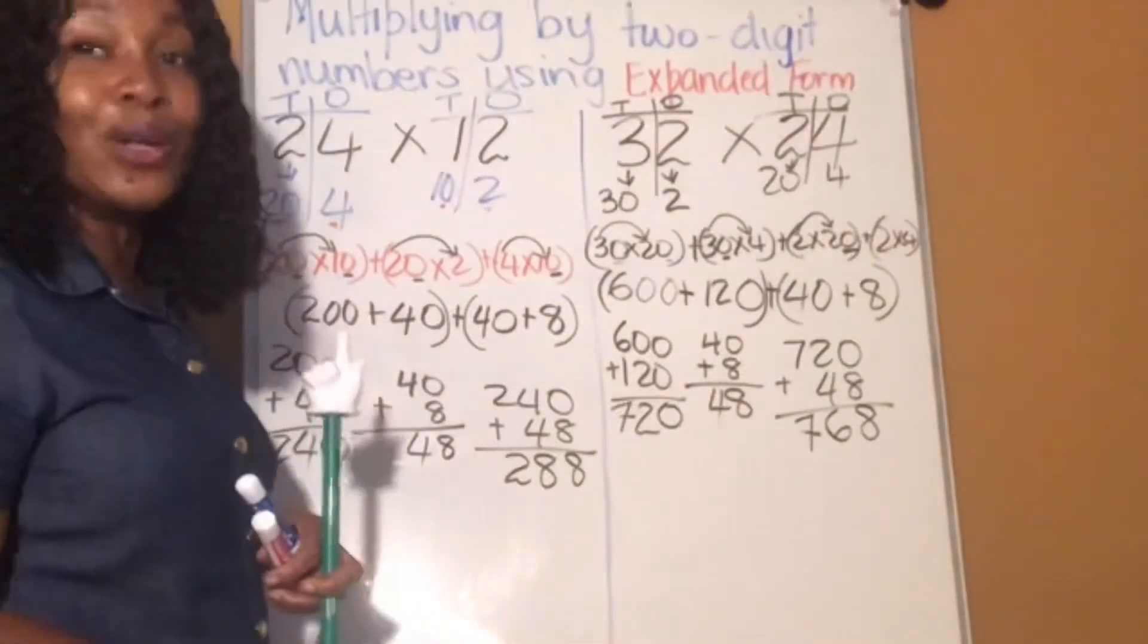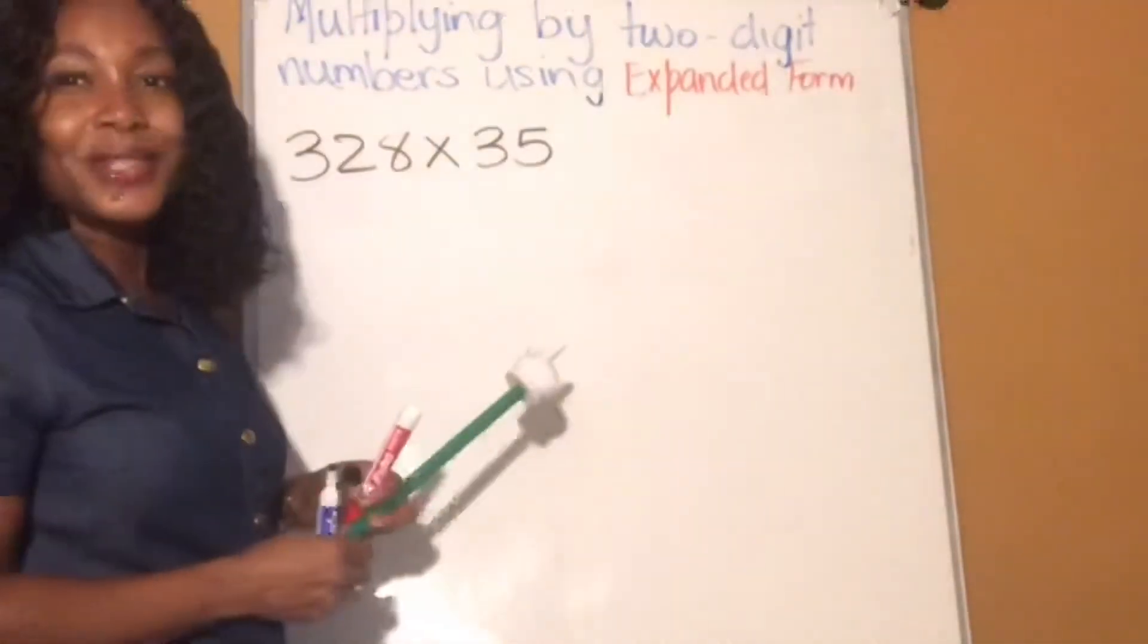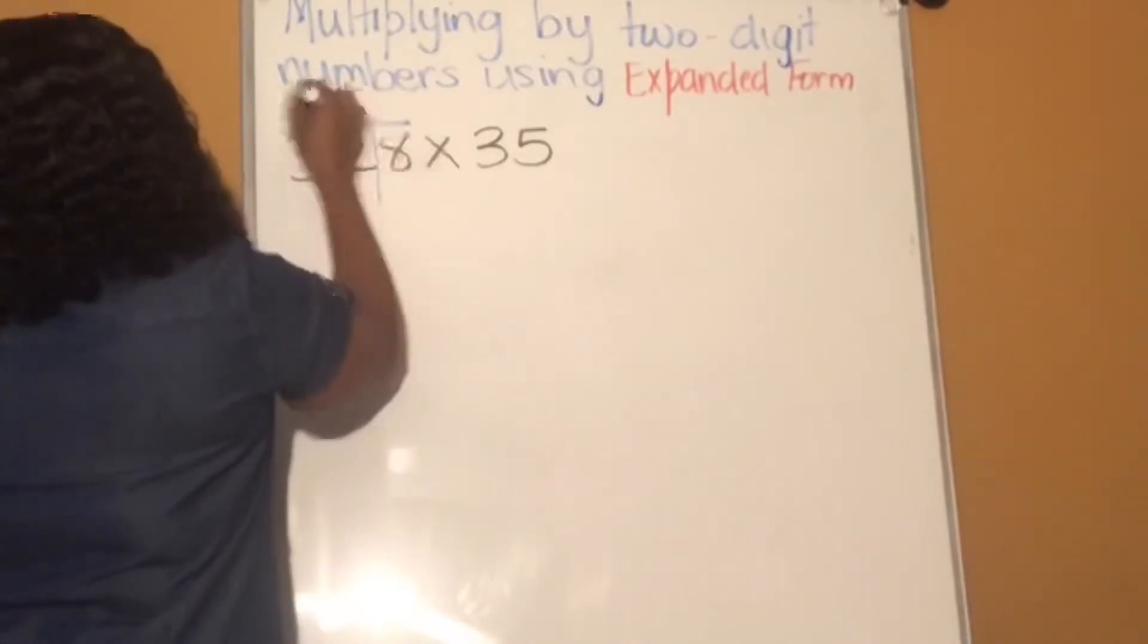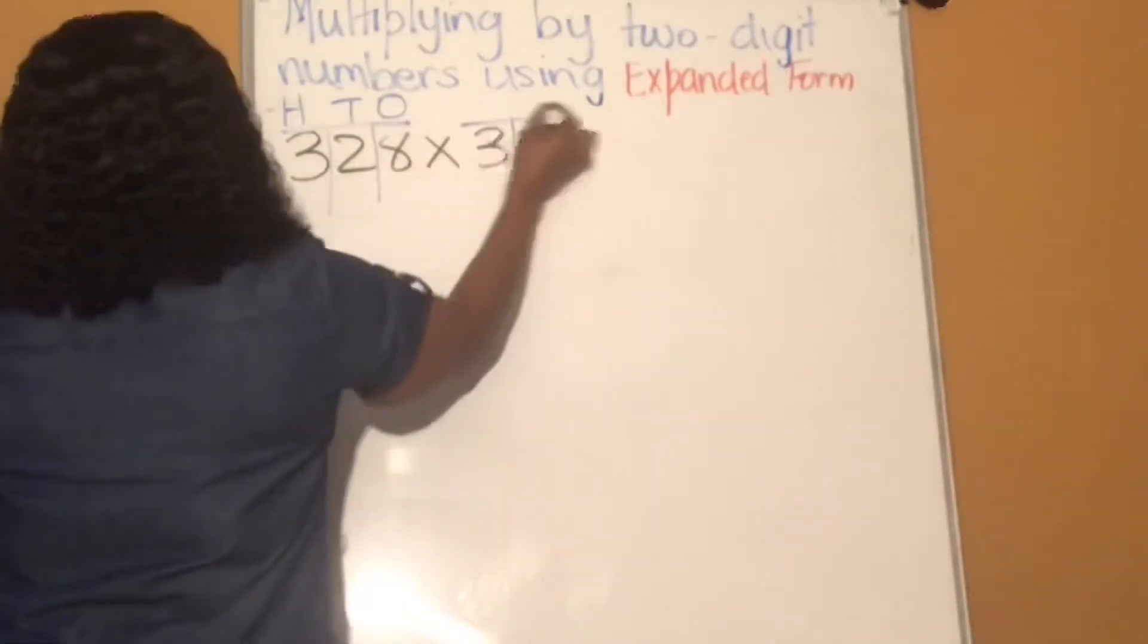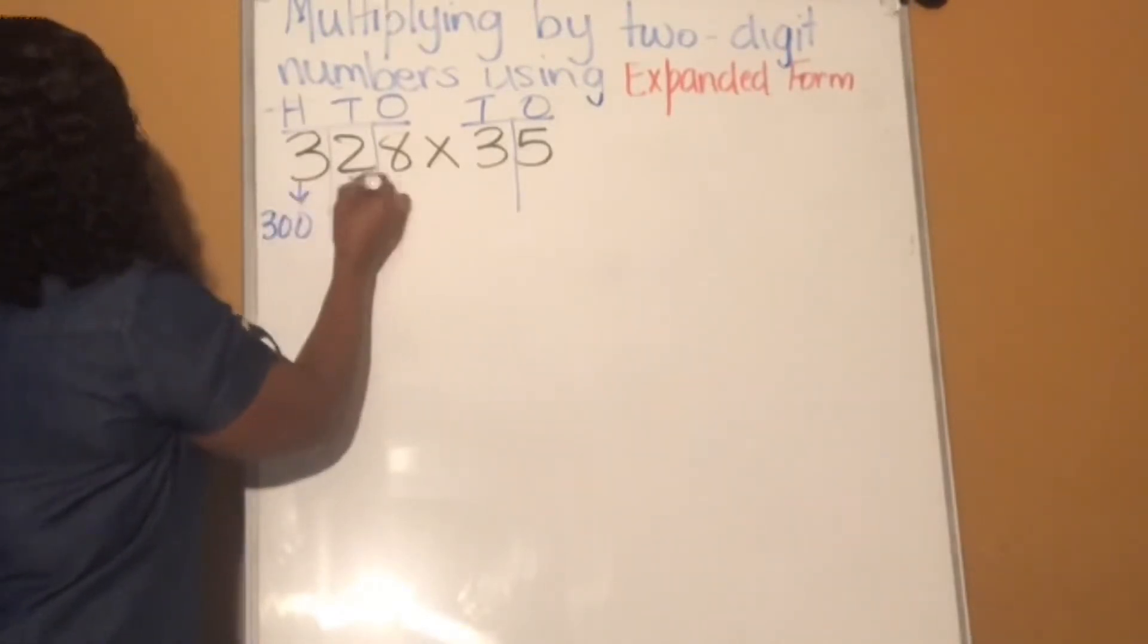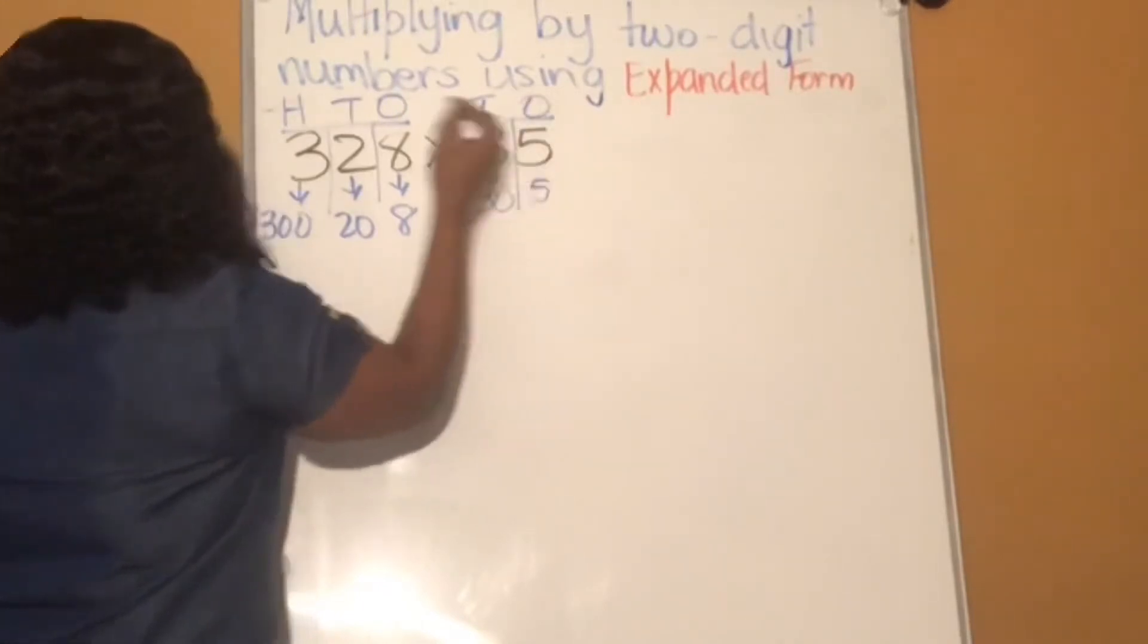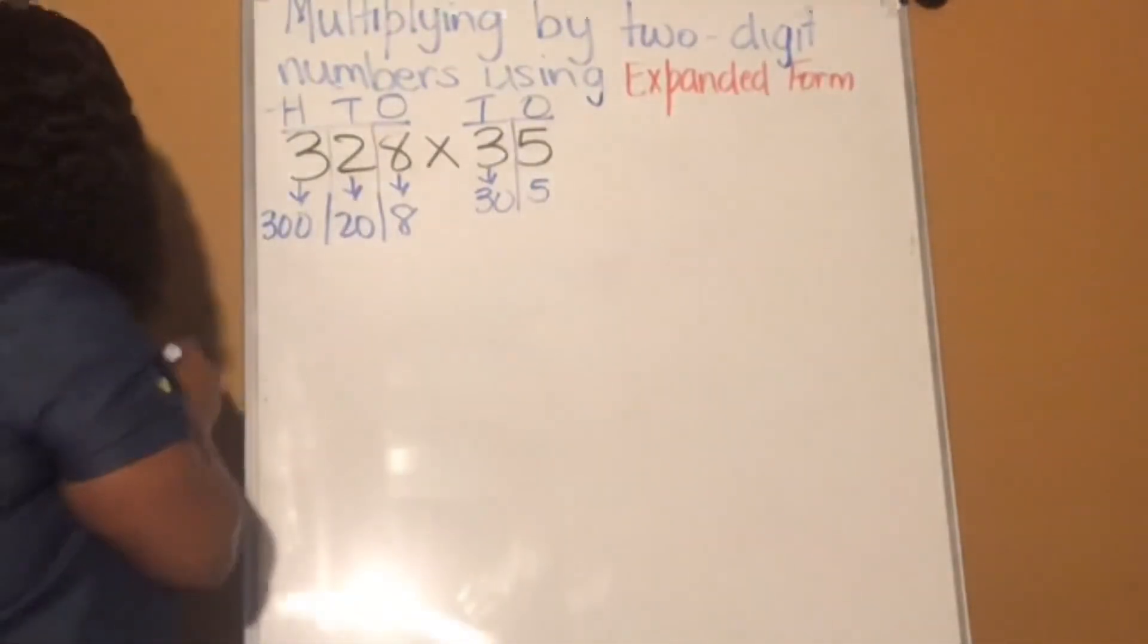And you can also multiply 3 digits by 2 digits. We're going to try one of that. So notice I cleared the entire space because we're going to need it now. So we have 328. That's 300, 2 tens, 8 ones. And we have 35. That's 3 tens and 5 ones. 300 is 3 0 0. 2 tens, that's 20. And 8 ones, that's 8. 3 tens, that's 30. And 5 ones, that's 5. You can separate them with the lines. So you can put plus sign. Depends on what you want.